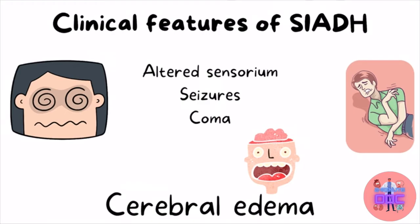The clinical features of SIADH include altered sensorium, seizures, and coma. These are usually the result of low serum sodium levels from dilutional hyponatremia. Because of the increased plasma volume, excess fluid can leak into the brain causing cerebral edema, which can worsen the condition.